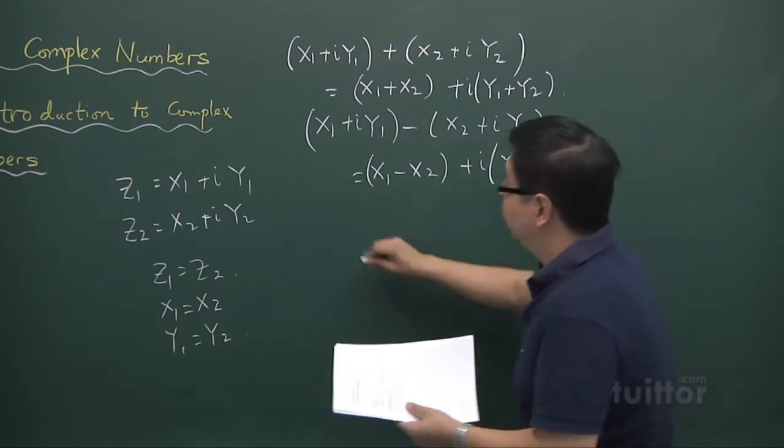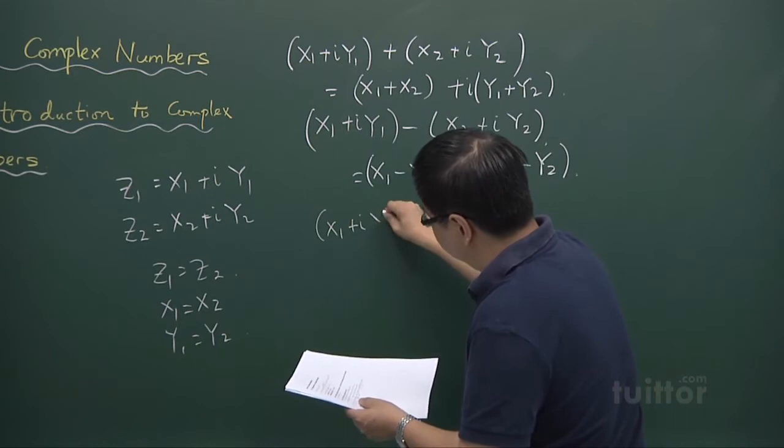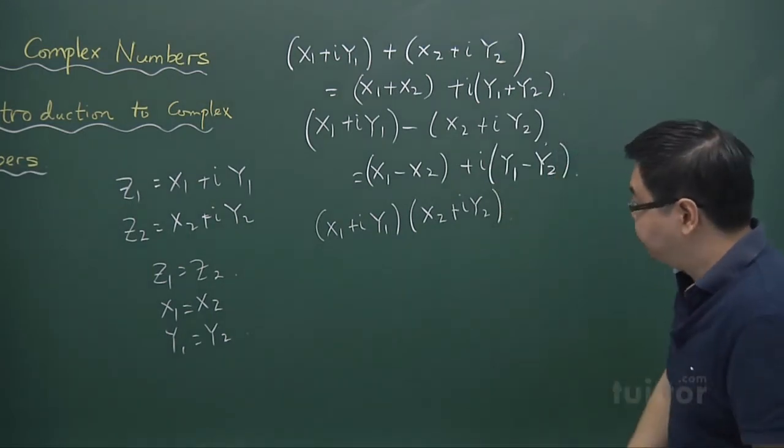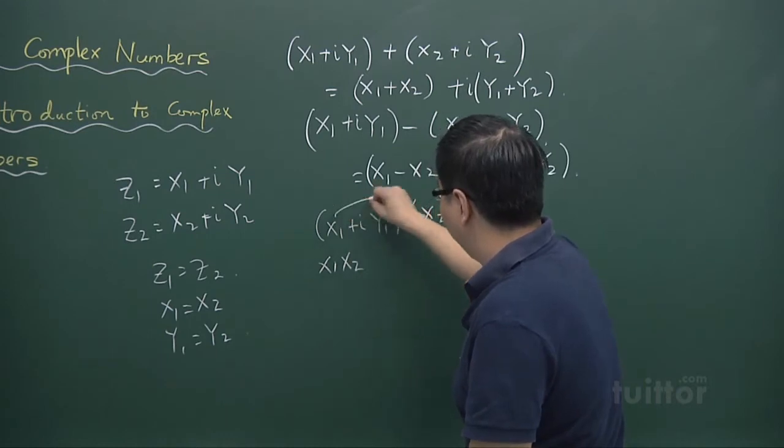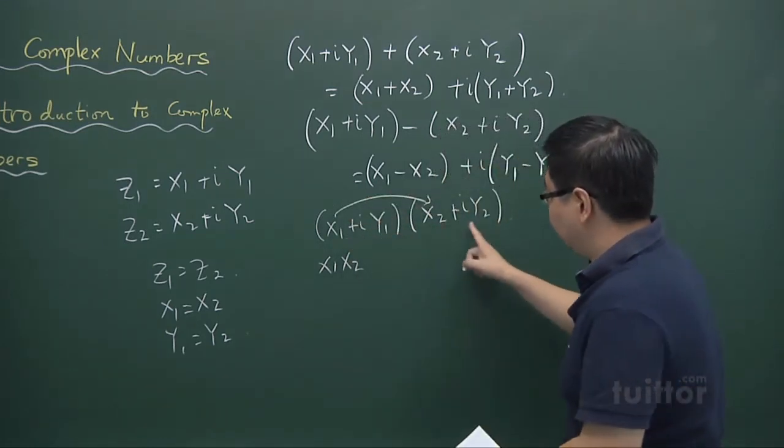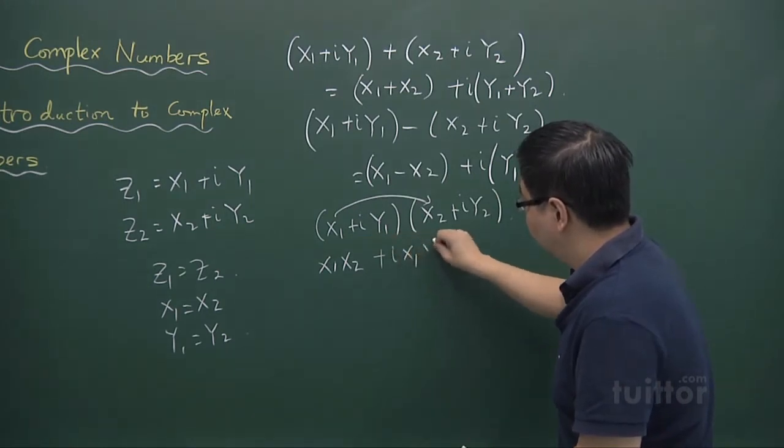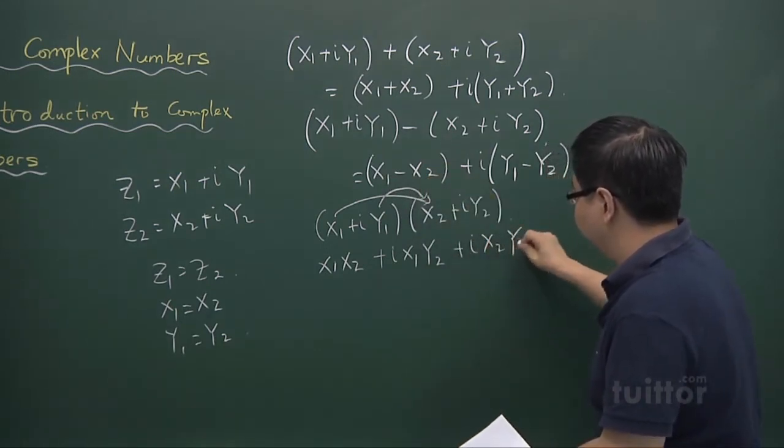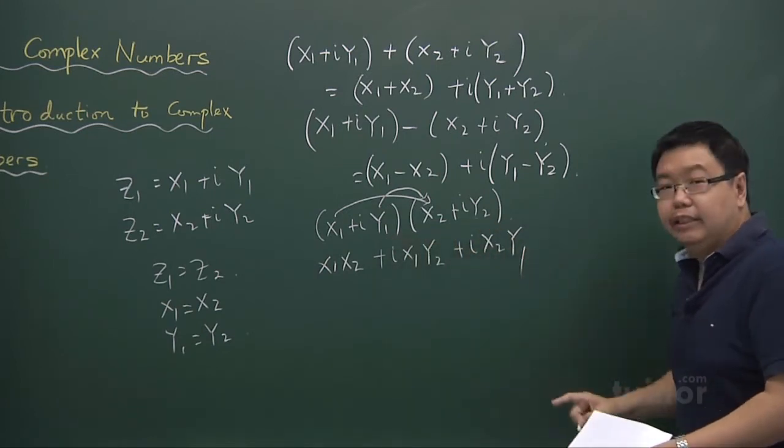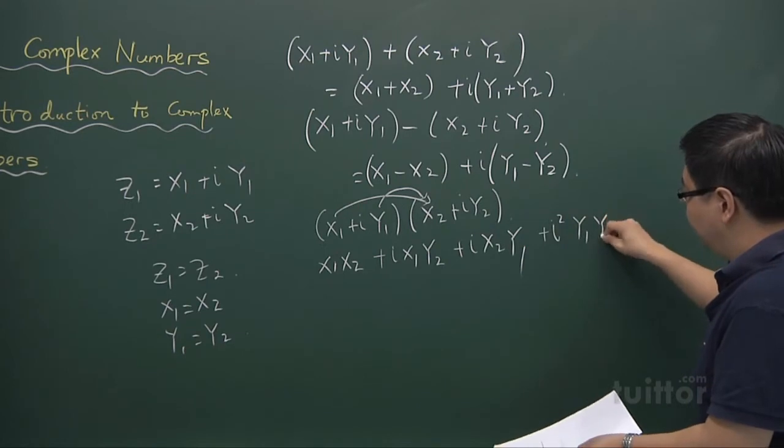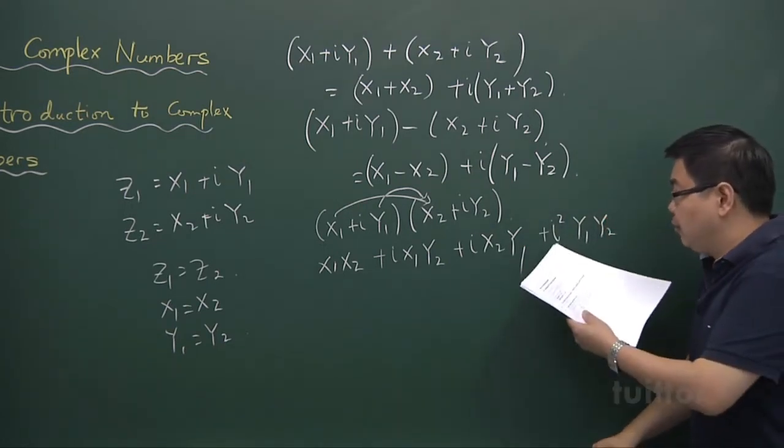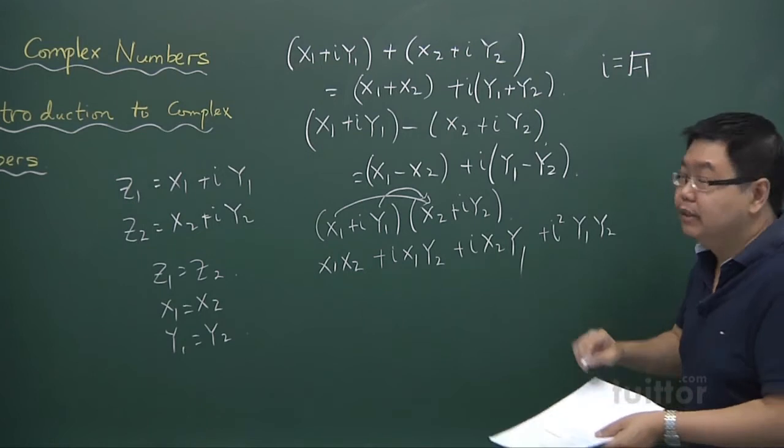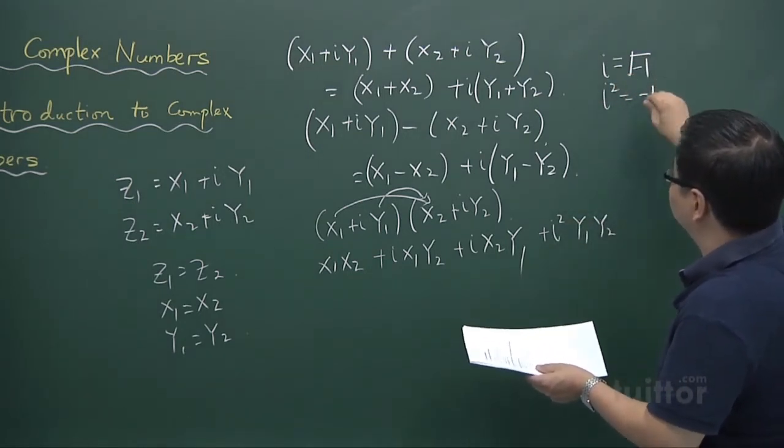Multiplication gets a little bit harder because if you have x1 plus iy1 multiplied by x2 plus iy2, what happens? You have x1 times x2, the usual algebra. Then x1 times iy2, so it's x1 times iy2. And this times this gives me ix2y1. And finally, this times this gives me i squared y1 y2. Now, what is i squared? We just now have already introduced to you, i is given by the positive square root of minus 1. So if we have i squared, it's actually minus 1.